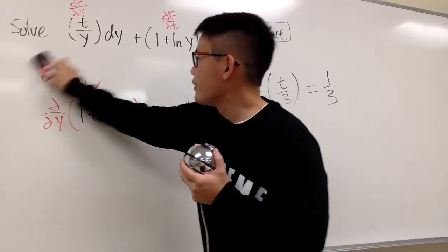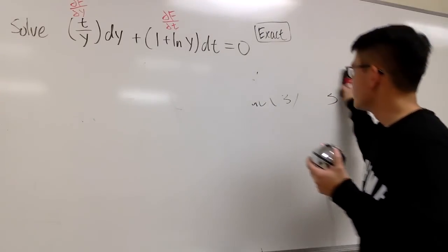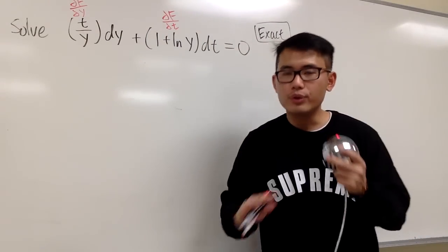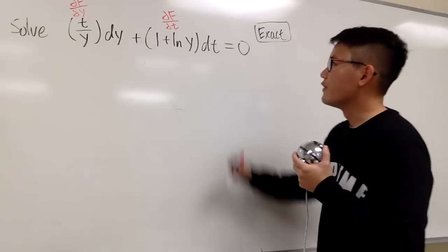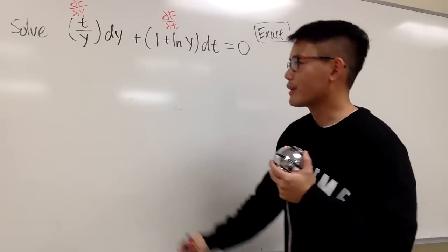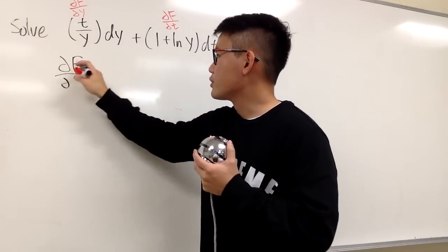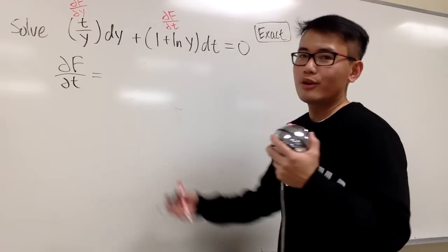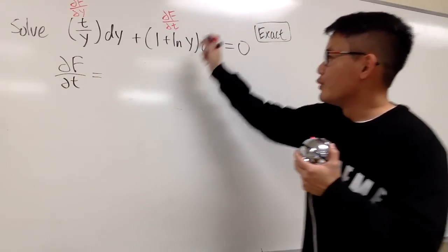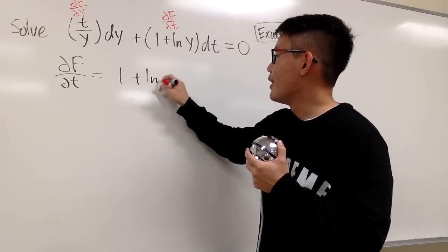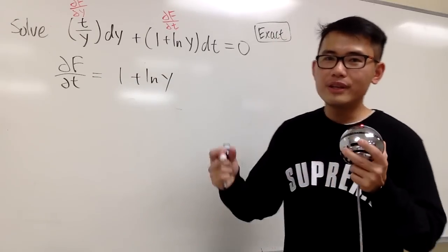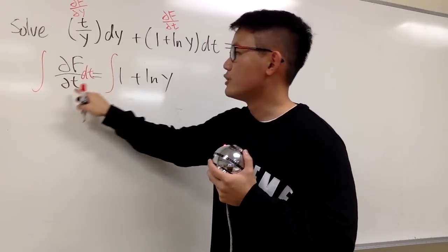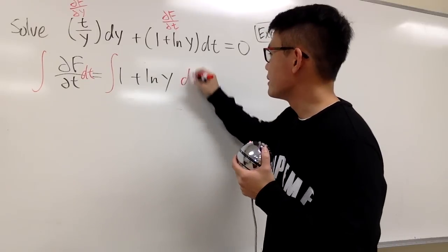Now we have to solve it. Let me erase the board. You can begin with either term — it doesn't matter. Just for fun, let's start with this one. So let's set the partial of F with respect to t equal to 1 plus ln y, and we have to figure out what capital F is. Let's integrate this with respect to t — the dt here.